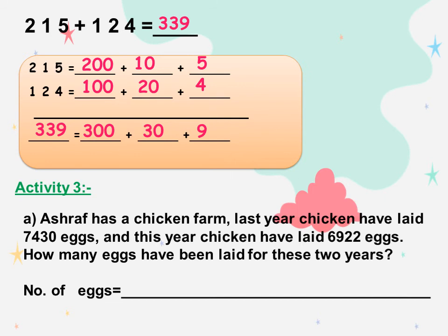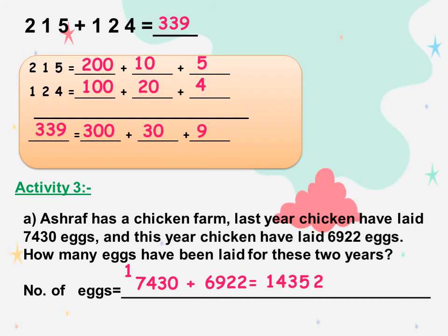Activity number 3. Ashraf has a chicken farm. Last year, chickens have laid 7,430 eggs, and this year chickens have laid 6,922 eggs. How many eggs have been laid for these two years? Number of eggs equals 7,430 plus 6,922. Ones: 0 plus 2 equals 2. 3 plus 2 equals 5. 4 plus 9 equals 13: write 3 and carry up 1. 1 plus 7 equals 8. 8 plus 6 equals 14.